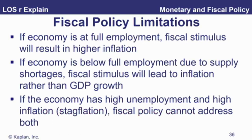Other limitations: if we're already at full employment and you launch a fiscal stimulus, all you'll do is raise prices. If we're below full employment due to supply shortages, tie those two points together — supply shortages cut back your short-run aggregate supply curve, force up prices, and you end up with stagflation: higher prices and unemployment. If you try to get out of that with aggregate demand stimulus, all you do is force prices up even further. So we can't hit both unemployment and address inflation.